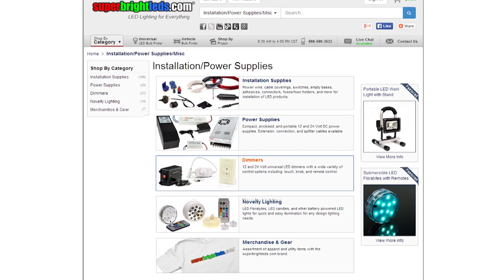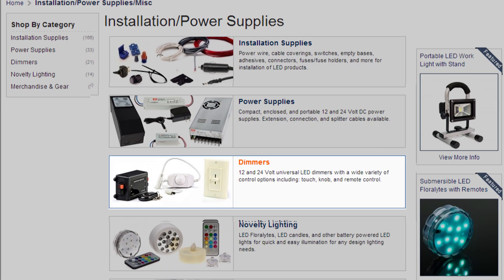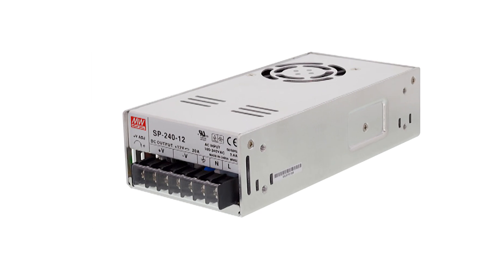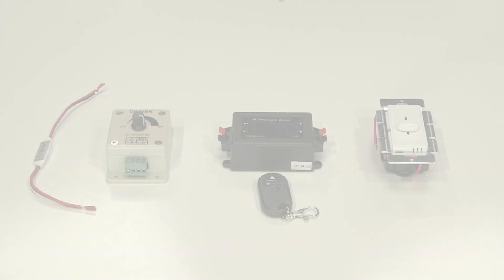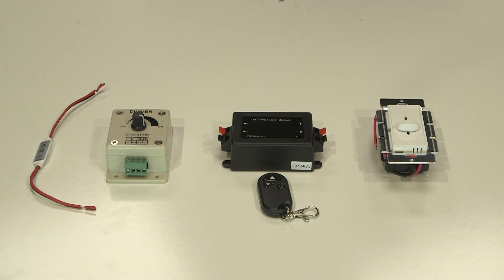The second way to dim a strip is to use a low voltage dimmer. The idea here is that we'll use a static power supply, take that low voltage output, and go into one of these low voltage dimmers that we see here.